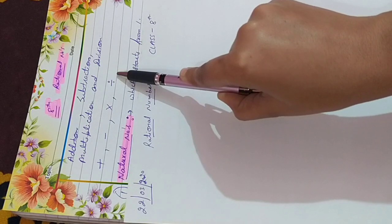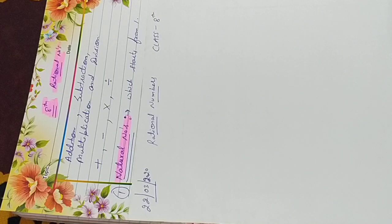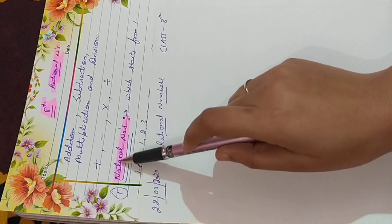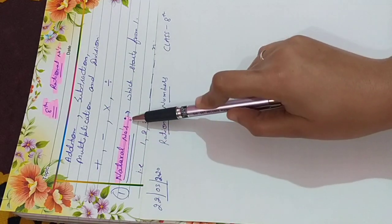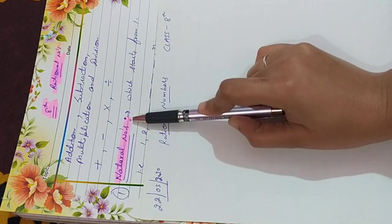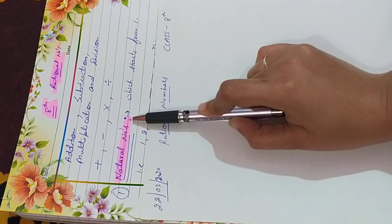After that, we started learning different types of numbers. And our first type is natural numbers. What are natural numbers? Natural numbers we have studied in previous class also, what we will discuss today also.